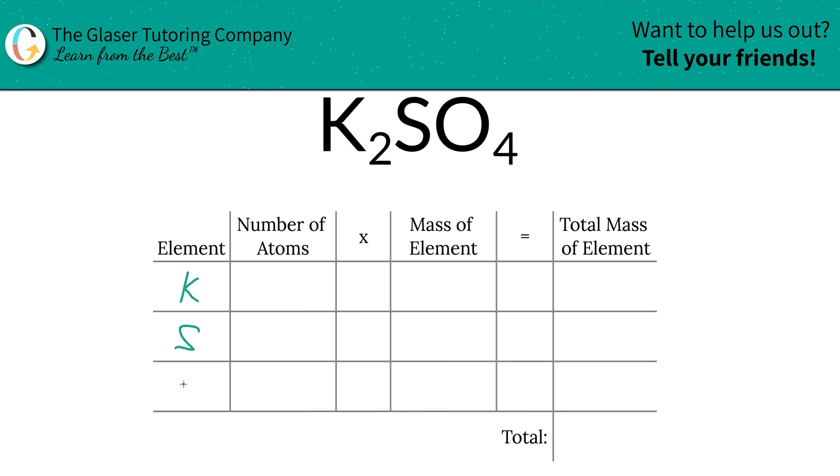So we have potassium, sulfur, and oxygen. Then we're going to identify the number of atoms—that's where the subscripts come into play. Now if you don't see a subscript at the bottom of one of your elements, just put in one. So there's two potassium, one sulfur, and four oxygen. Easy peasy.